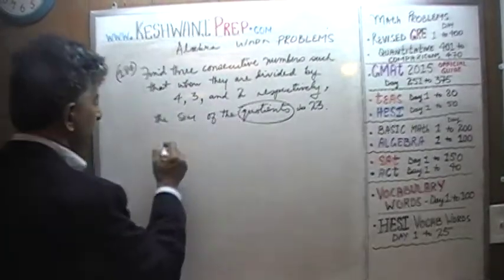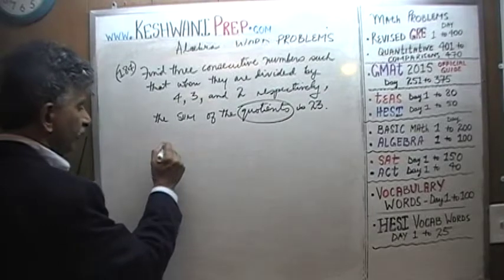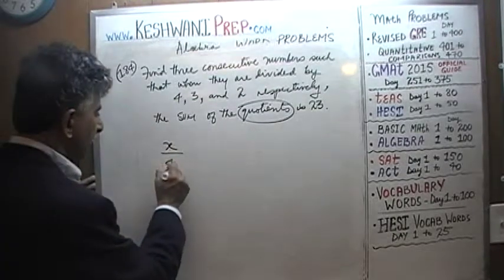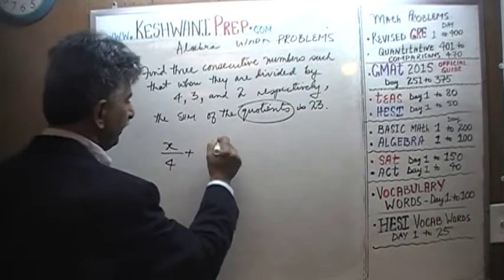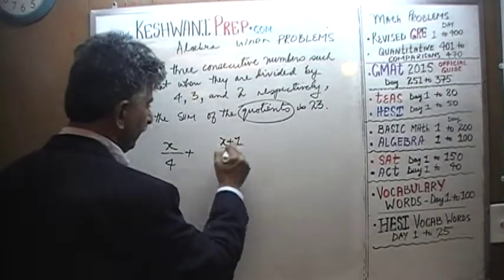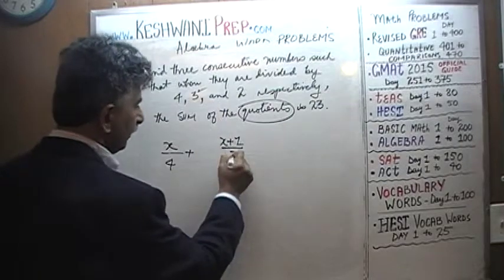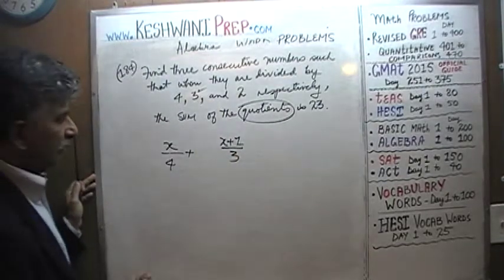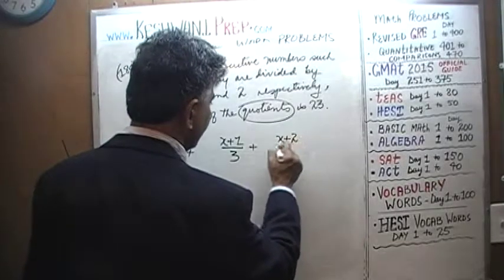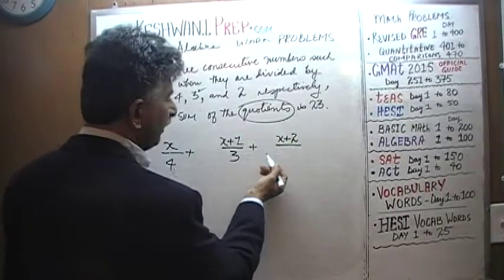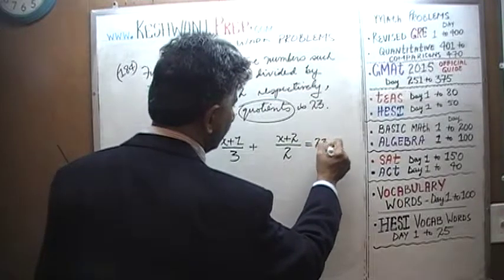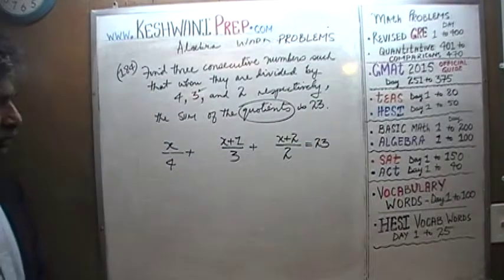Let's begin. There are three consecutive numbers, so let's call the first one x — and we divide that by 4. The next one is going to be x plus 1, divided by 3. And the next one after that is x plus 2, because they are consecutive, divided by 2. We are told that they all have to add up to 23.